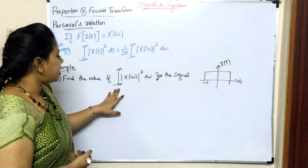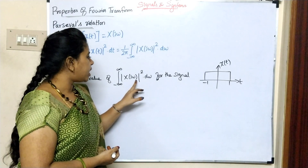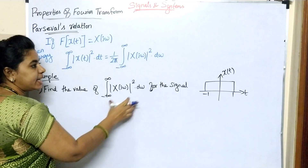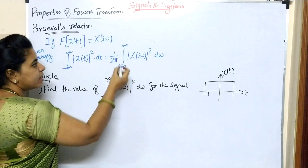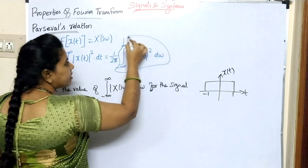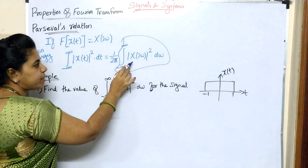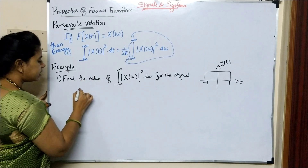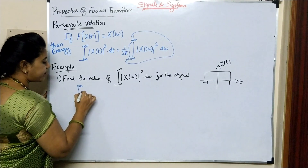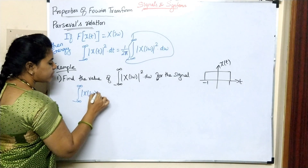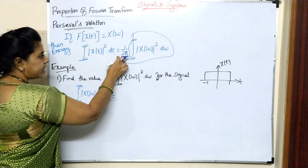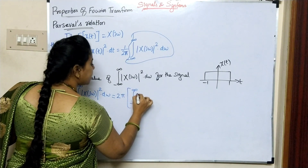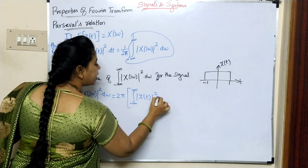Example: find the value of integral minus infinity to infinity modulus of x of j omega whole square into d omega for the signal x of t. Using Parseval's theorem, integral minus infinity to infinity modulus of x of j omega whole square into d omega equals 2pi into integral minus infinity to infinity modulus of x of t whole square into dt.